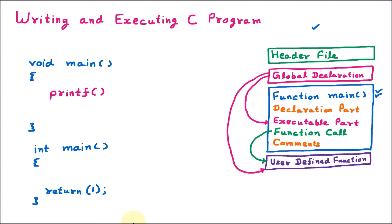Whenever you are going to include any function inside the main program, you should provide the proper header file because the printf function will get the power to work from the header file. This printf function starts with a bracket and ends with a bracket, that's why it is a function. It is the part of header file stdio.h. On the top of the program we provide the header file stdio, which is the standard input output header file. The extension .h stands for header file. The less than and greater than signs mean it is a system header file. Before that we provide the preprocessor directive, which is hash, saying to work on this line first. Include means include this file, so from stdio.h we get the powers into the printf function.